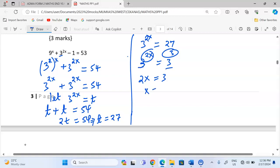Therefore, the value of x equals to 3 out of 2, which is equivalent to 1 and half, which can also be expressed as 1.5.